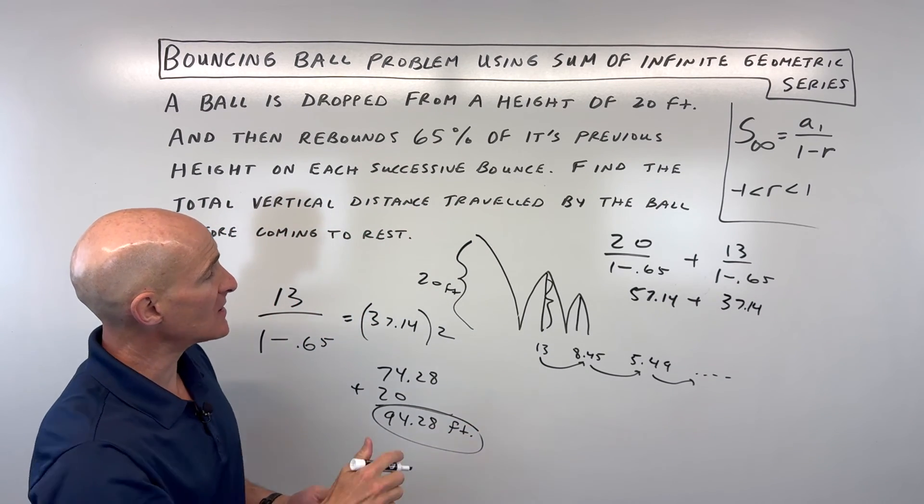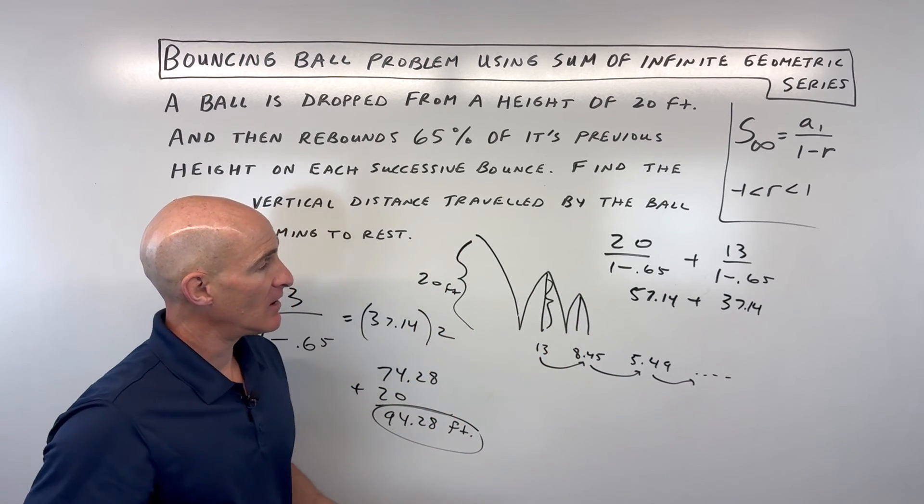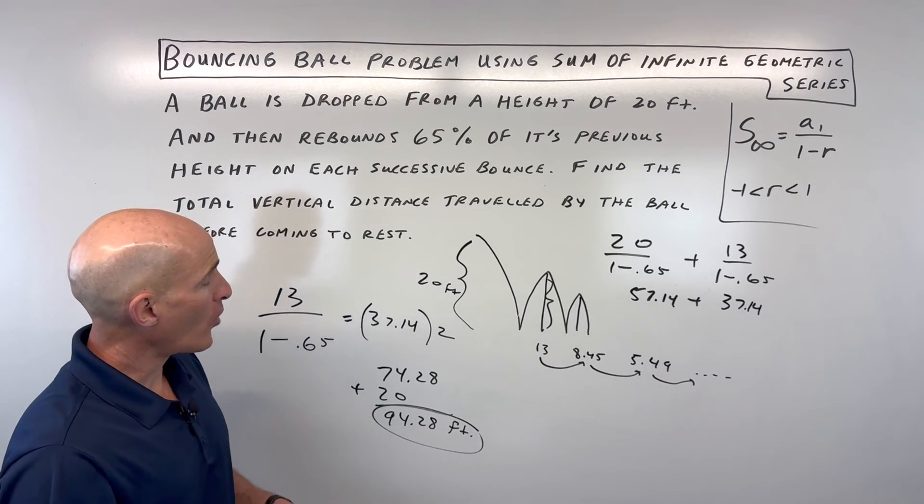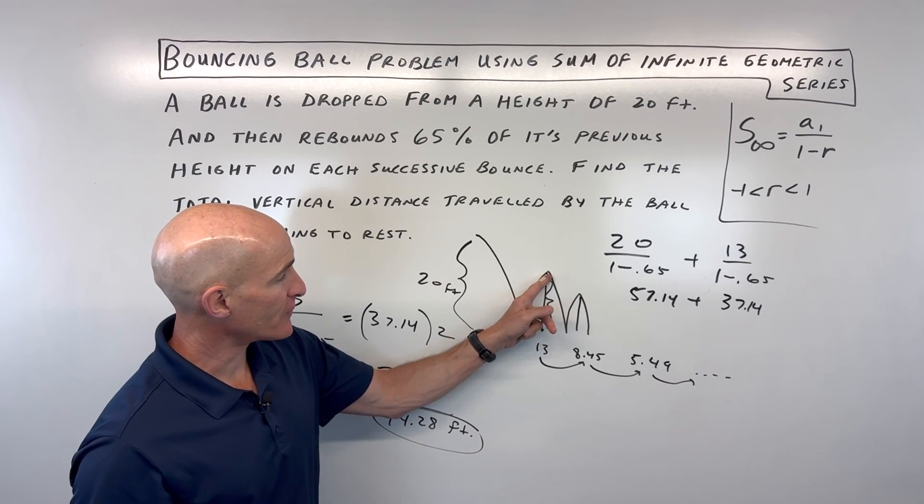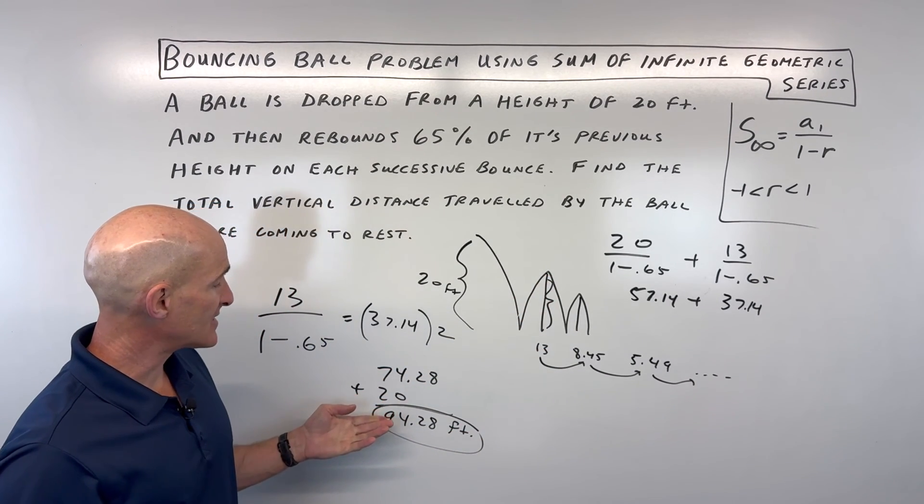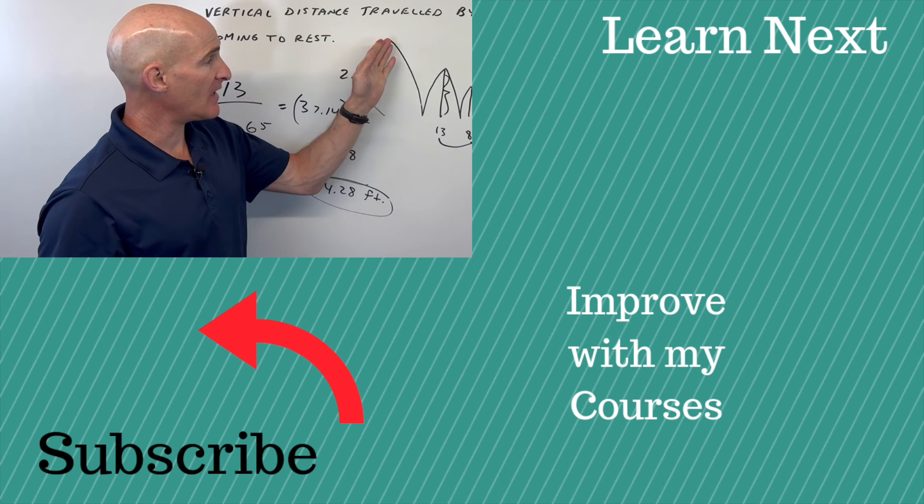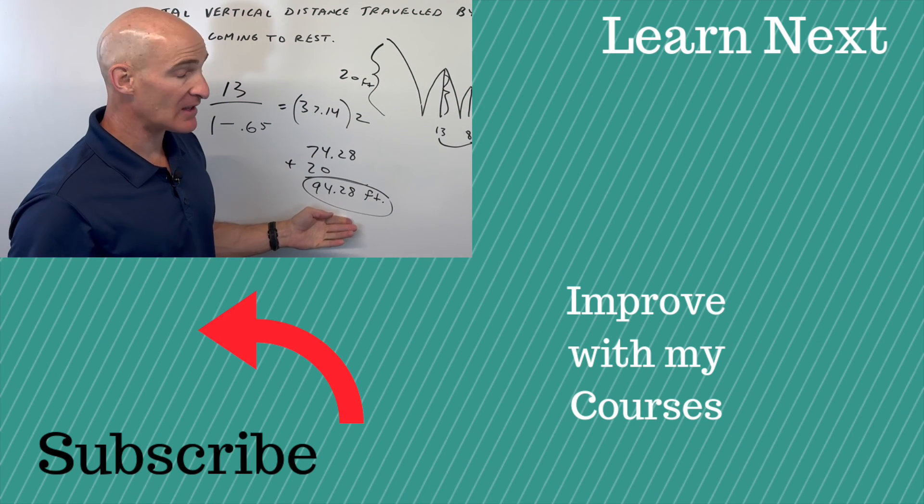So exact same answer. That's one way to do it is to separate the down parts from the up parts, or I just kind of like to ignore the initial drop, figure out this is our first term, double that sum because you're doing the up and down, and then just add the initial 20-foot drop at the end.